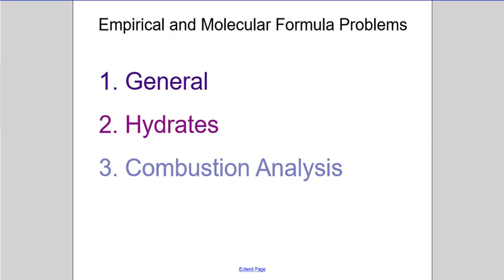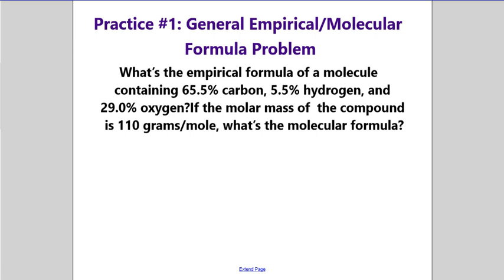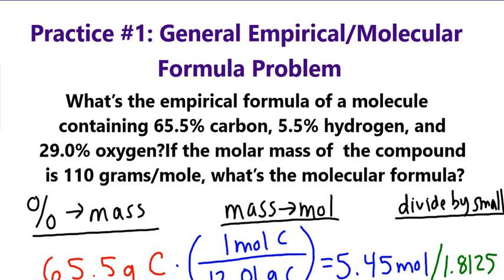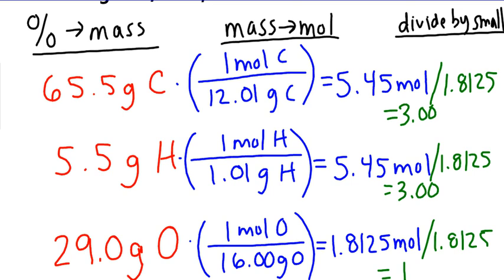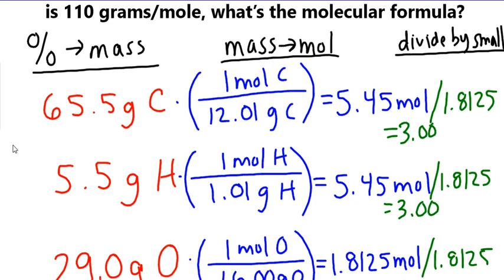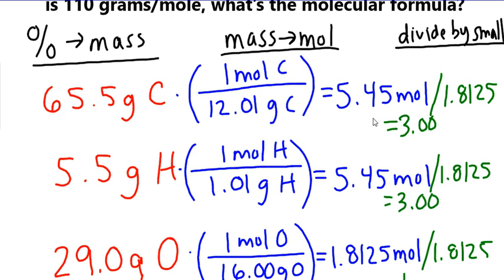We'll break this down into three parts: general empirical/molecular formula problems, hydrate problems, and combustion analysis problems. The general ones are the stuff we did back in honors. For example: what is the empirical formula of a molecule that contains 65.5% carbon, 5.5% hydrogen, and 29.0% oxygen? It gives us the molar mass of the compound as 110 grams per mole. So what's the molecular formula? Going through this — percent to mass, mass to moles.